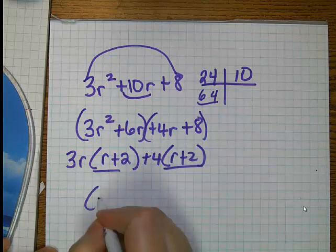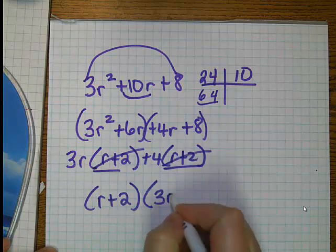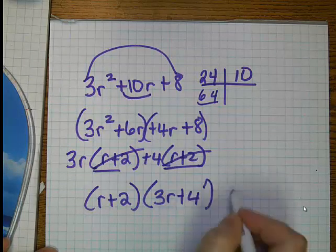So this is your common factor that comes out. What's left over? 3r plus 4. And that's your final answer.